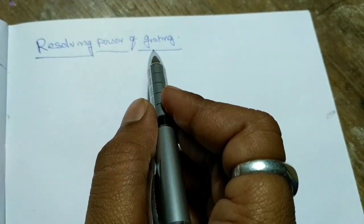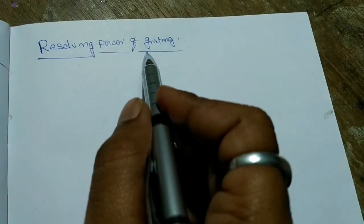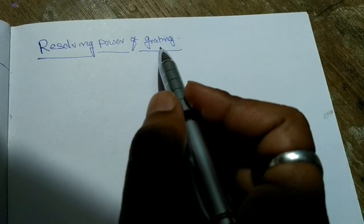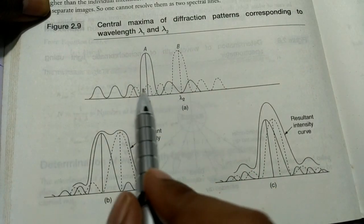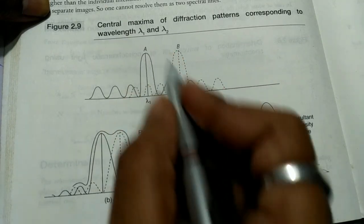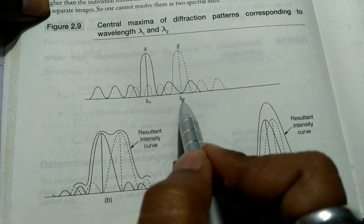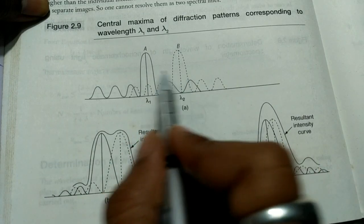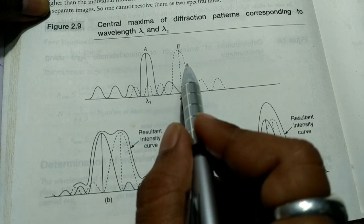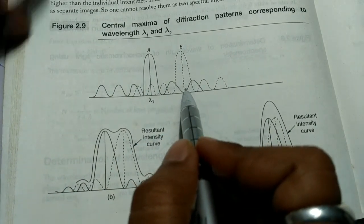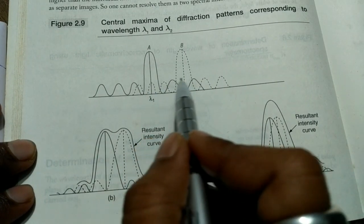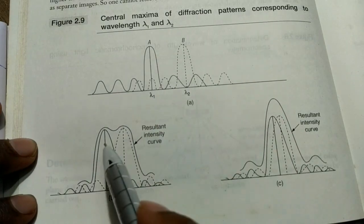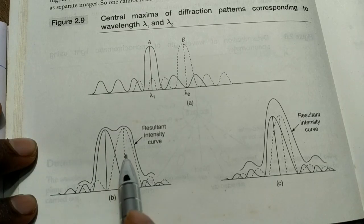The resolving power of grating gives the ability to separate two nearby wavelengths. In the diagram, wavelengths lambda-1 and lambda-2 are shown as peaks A and B. When these two wavelengths maintain a large distance between them, the instrument is able to separate them — this is the 'well resolved' condition. In the second condition, the principal maxima of the first wave coincides with the minimum of the second wave, and vice versa.